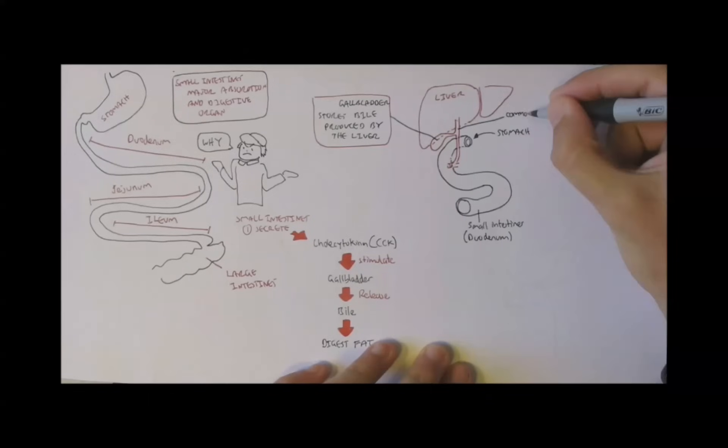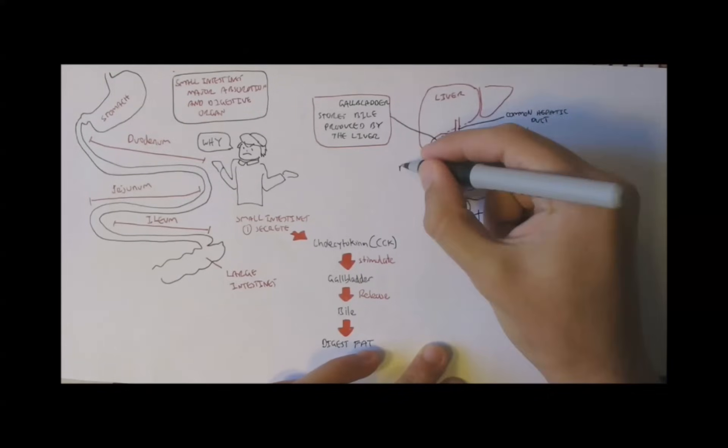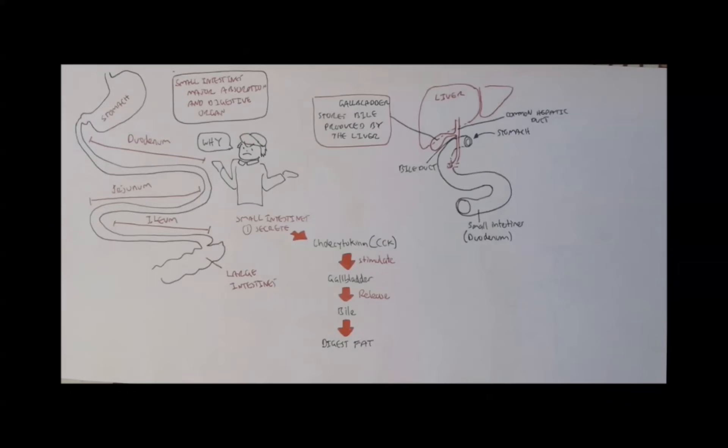So, the common hepatic duct is where the bile travels through from the liver. And the bile duct is where the bile travels through from the gallbladder.